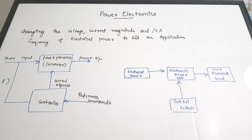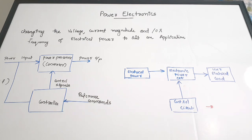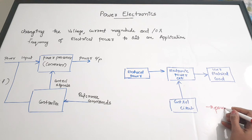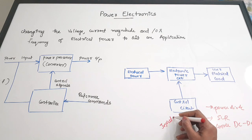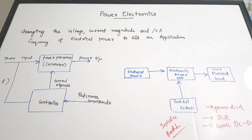That is the process we do in power electronics. In power electronics, if you look at the syllabus, we study about power diodes — unlike normal diodes studied in other subjects. We also study SCR, DC-to-DC converters, inverters, and rectifiers. These are power-related devices, and videos on all these topics will be uploaded in the upcoming days.